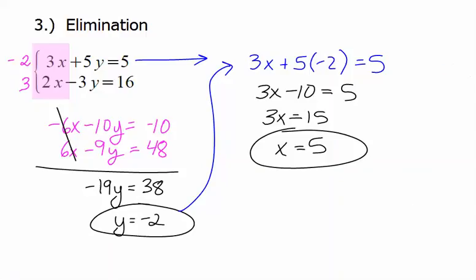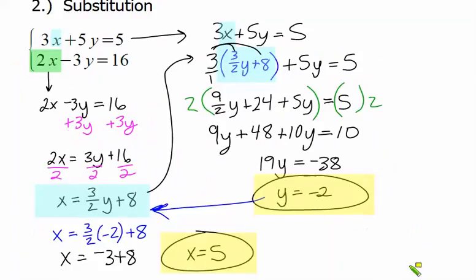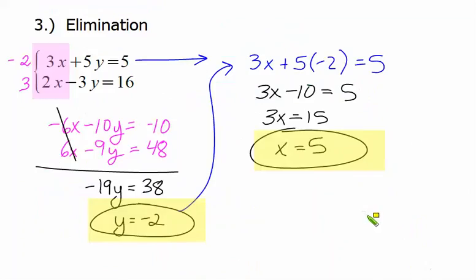Notice this was the same problem we just did a couple minutes ago by substitution, and notice we've got the same answers. With substitution, we ended up with x equals 5 and y equals negative 2, as we did with elimination. This is an overview of systems of equations from Algebra 1, and hopefully you're right back on track.